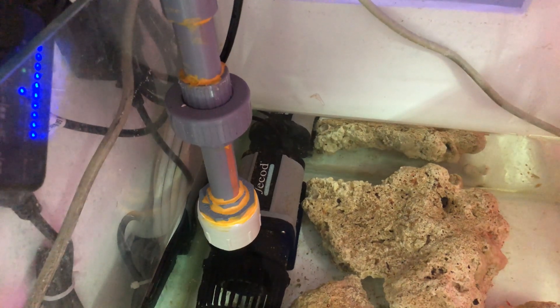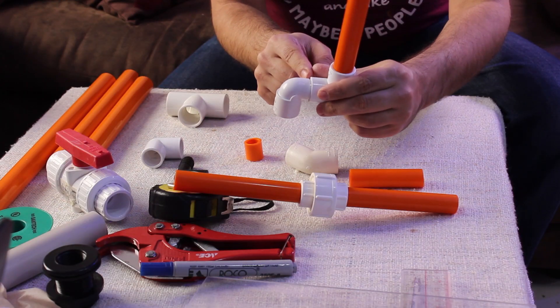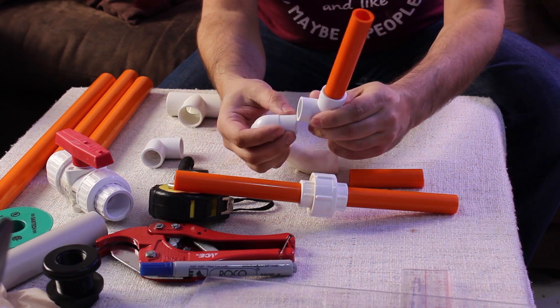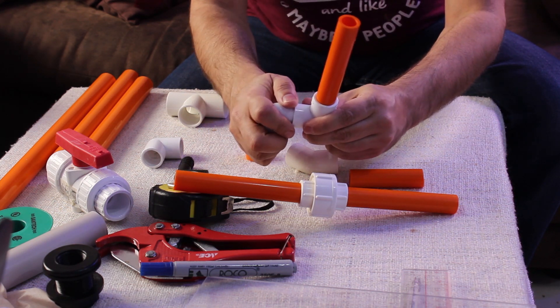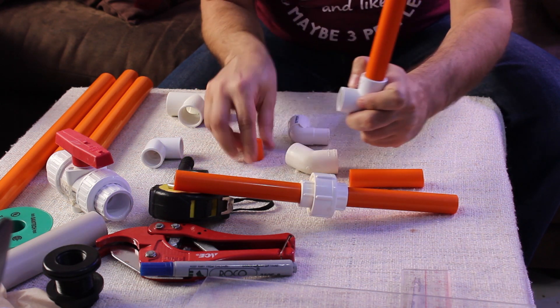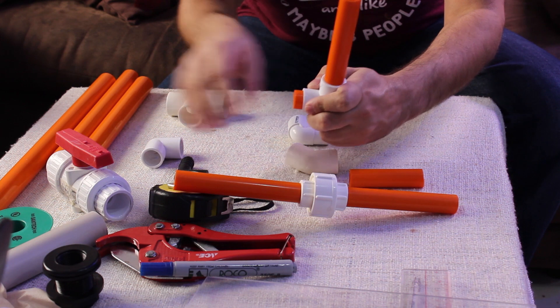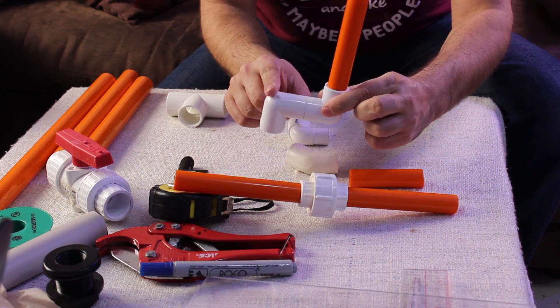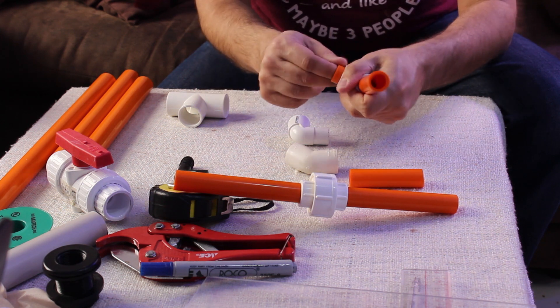The street elbow is useful if I want to connect two elbows directly together. This is very helpful. Instead of adding a small pipe between two regular elbows, I'll just use the street elbow. By this I'll have less parts and less chances of leakage.